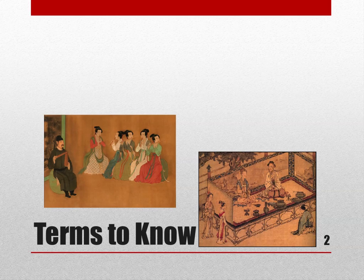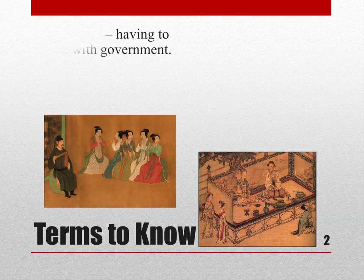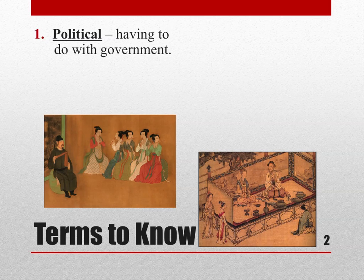Before we start learning about ancient China's government, we need to understand certain vocabulary words. The first is 'political.' We're going to talk about the political development of China. Political means having to do with the government, so we're going to be learning how the government of China has changed over time.